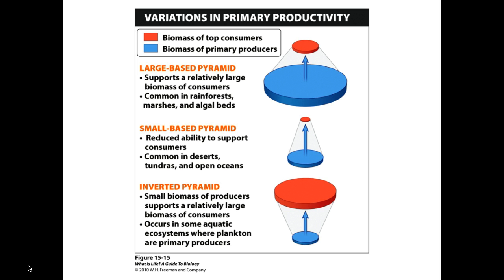Occasionally you get the inverted pyramid. This tends to happen when you have a very large organism as your primary consumer — whales, for example. Baleen whales eat plankton and primary producers, which are themselves microscopic, yet the baleen whale is extremely large. So you get a huge amount of biomass just because the whales themselves are so large, even though you have a small number of individuals.